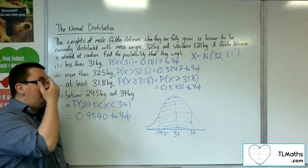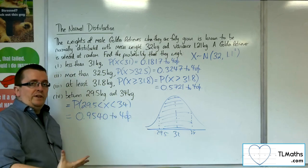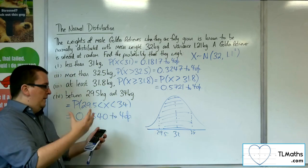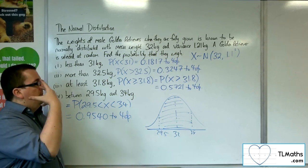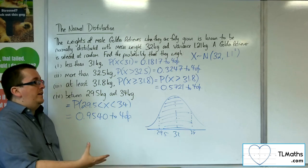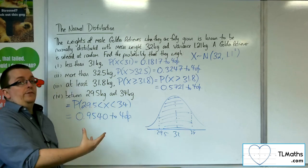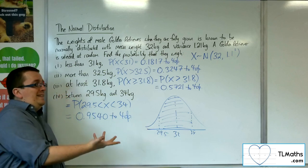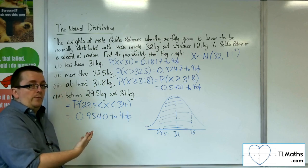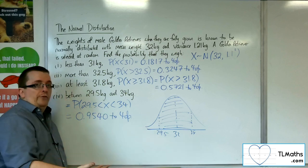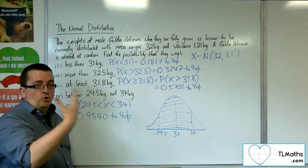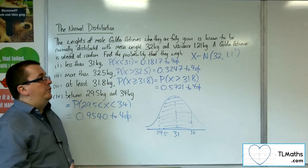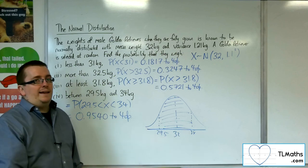And so that is how we can find probabilities quickly using our normal CD calculator function. As I said, I didn't show you how to convert all of these into Z values as we did in the previous couple of videos. Because in the exam, you will just be expected to use your calculator straight off the bat with these. But when we get onto inverse norms and working backwards, we will need to bring the formula back in.